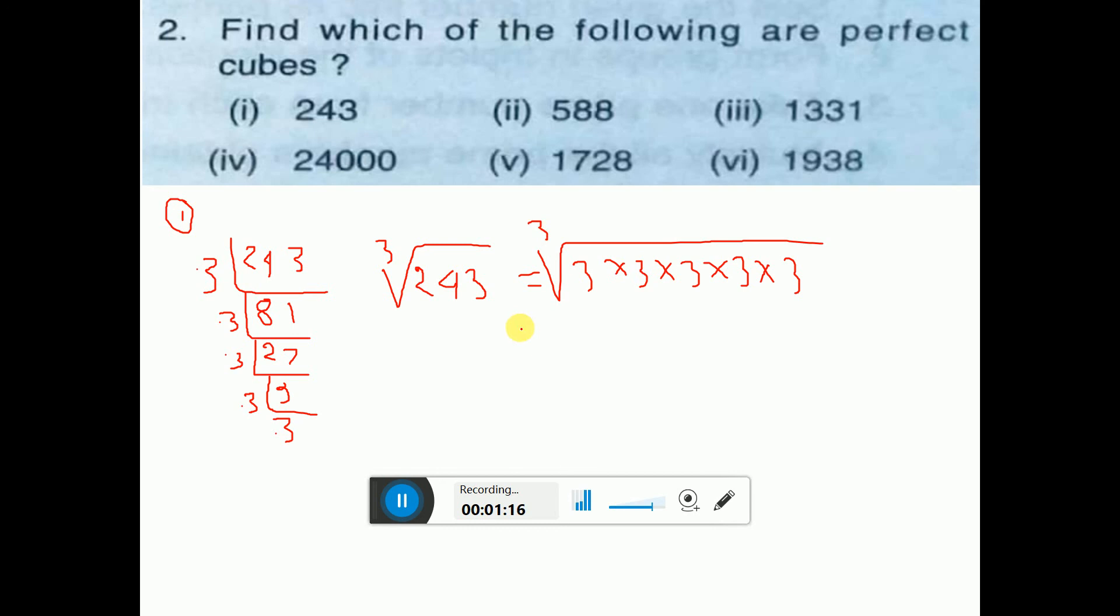Now inside cube root, from three 3's, one 3 will come, another two left. So this is cube root of the two left, 3 times 3. That means this we cannot take out.